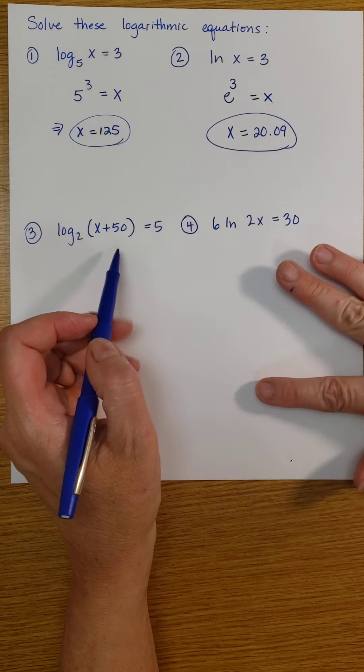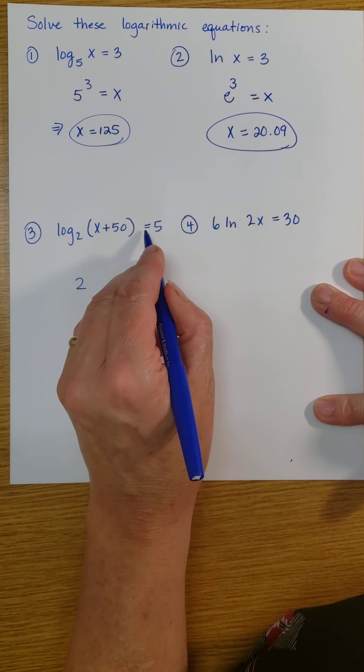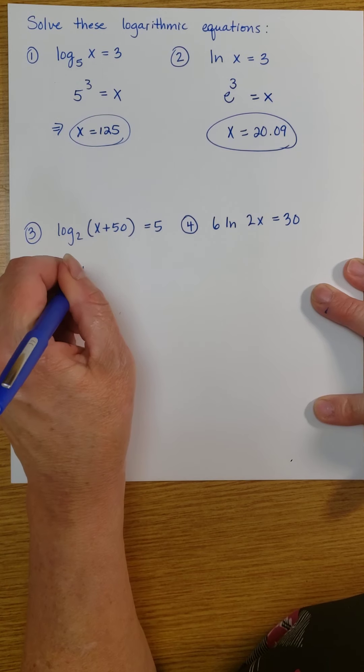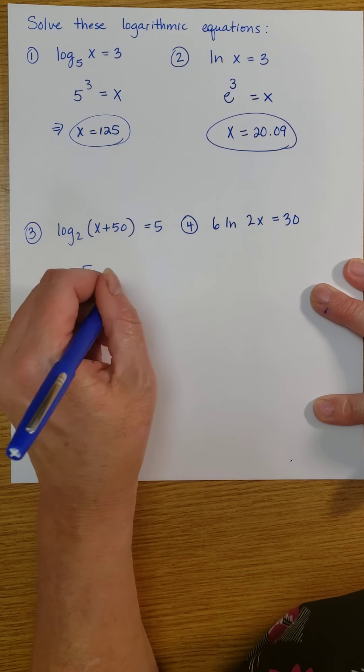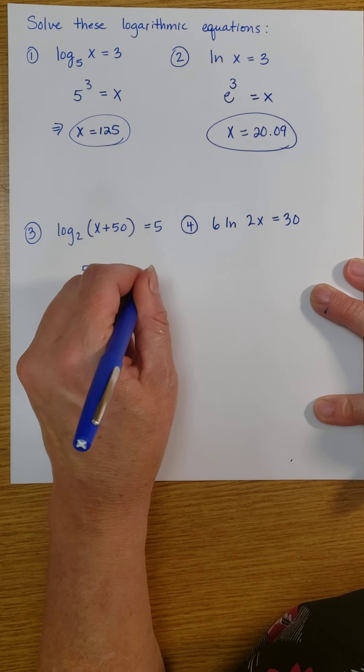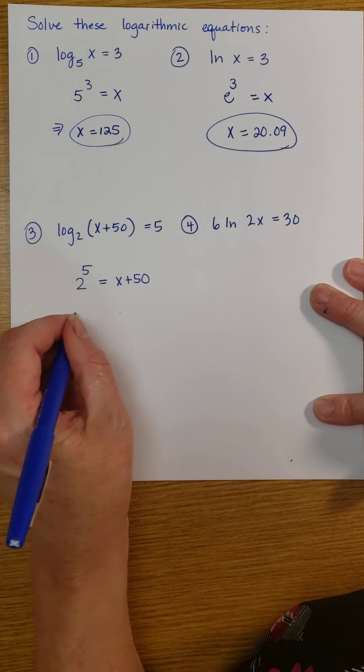Here, same thing, our base is 2, and the log is the exponent. So my exponent is 5, and that is equal to x plus 50. So now I can solve this. 2 to the 5th power is 32.